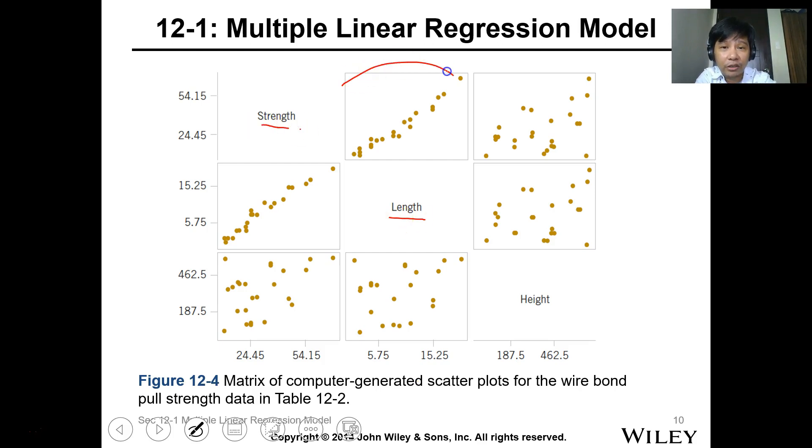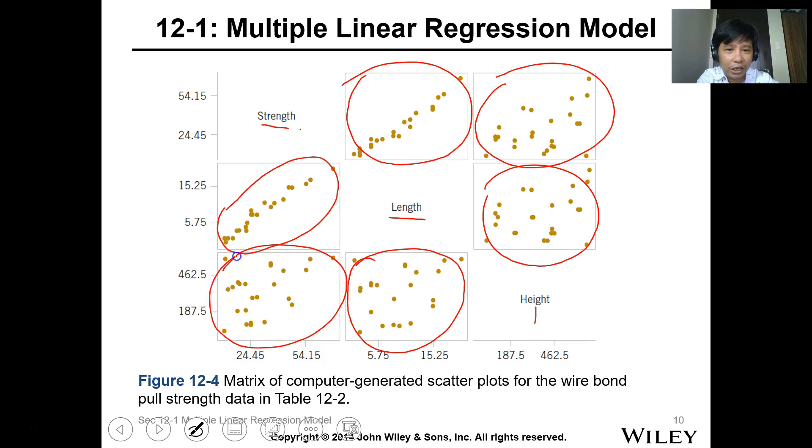This figure shows strength versus length. This one is strength versus strength, so that's linear. This one shows strength and height. This is length versus height. This one is strength versus height. This could be generated by Minitab, but in Excel we cannot generate this type of model. But anyway, Excel can still give regression model for multiple regression.